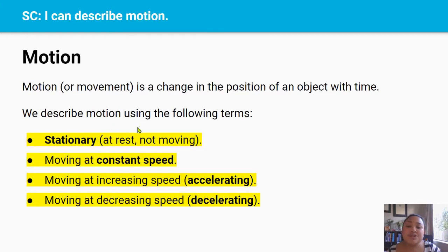And we describe motion using the following terms. The car could be stationary or at rest, it's resting and it's not moving. The car could be moving at a constant speed, like if I was driving down a straight path of road at 50 kilometers an hour with no speed bumps and no pedestrian crossings.